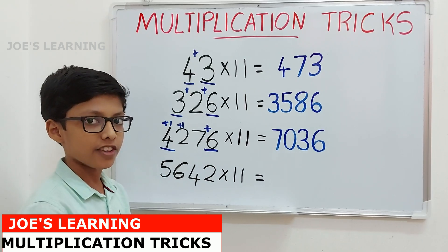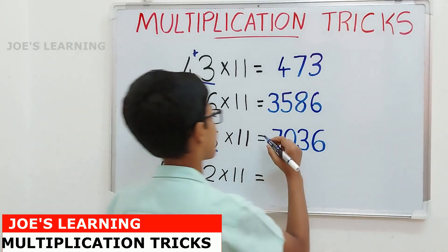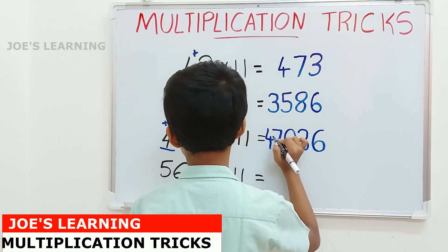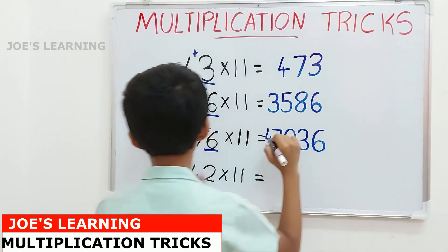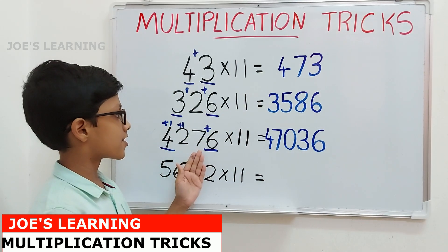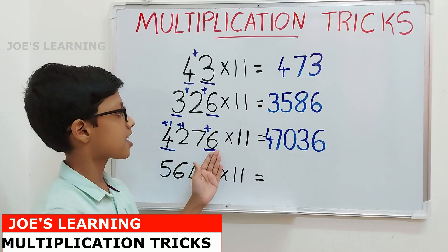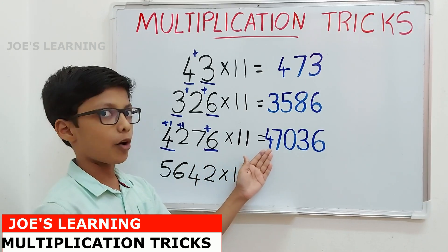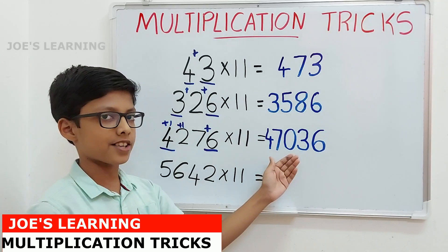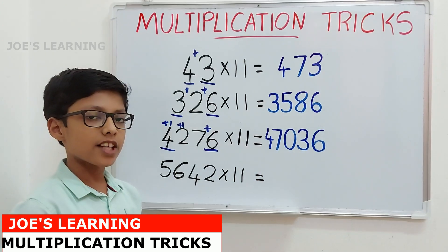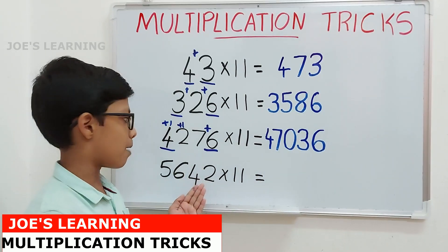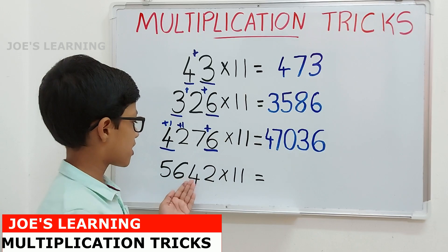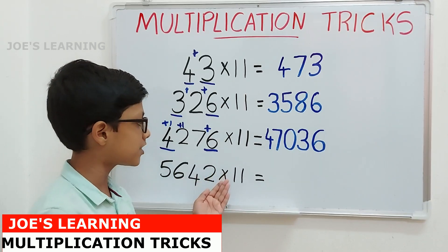We look at the first digit, which is 4, and write 4 as the first digit of the product. So 4276 × 11 equals 47,036.